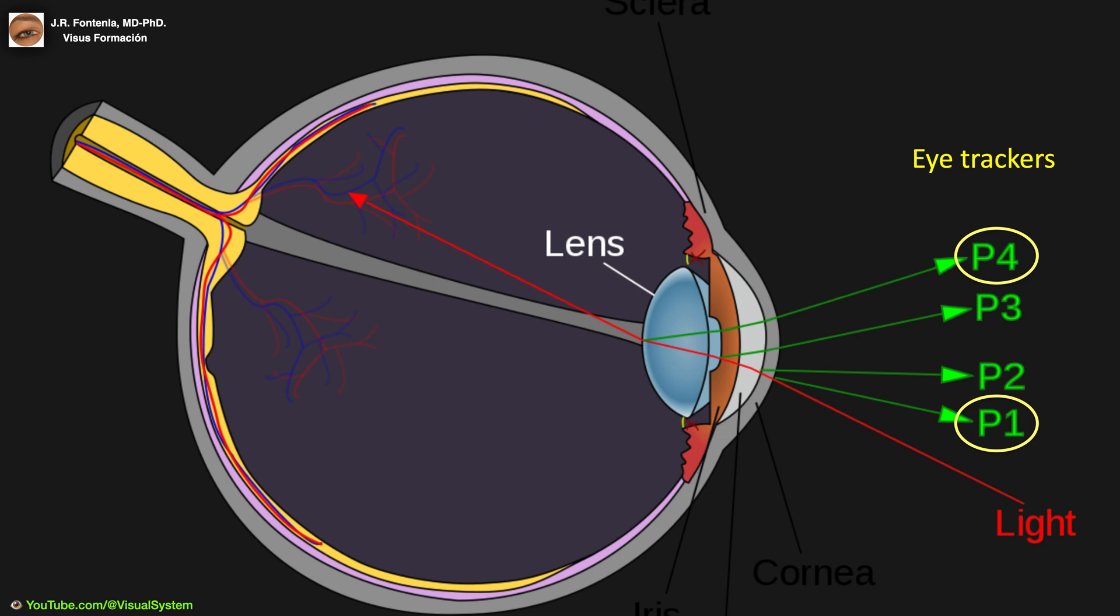If the eye rotates, however, the two images move through different distances and do change their separation. The physical separation of these two images, therefore, yields a continuous monitoring of the angular position of the eye, or of the point in space at which the gaze is directed.